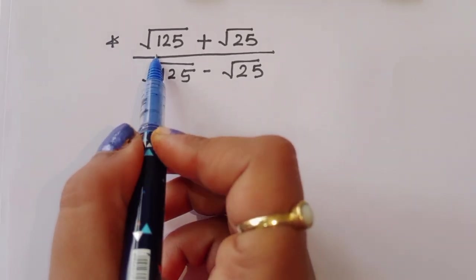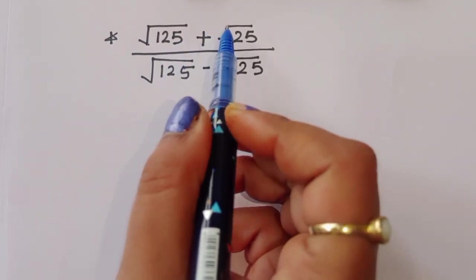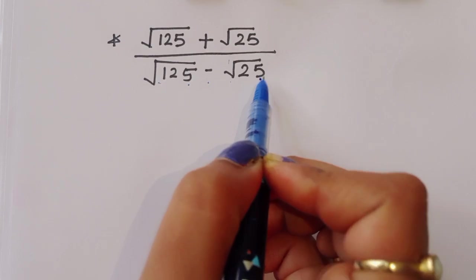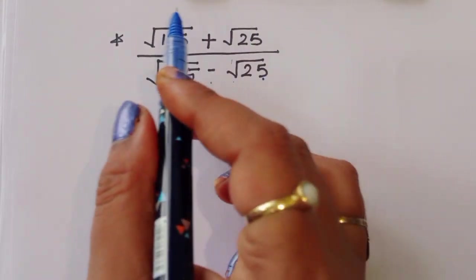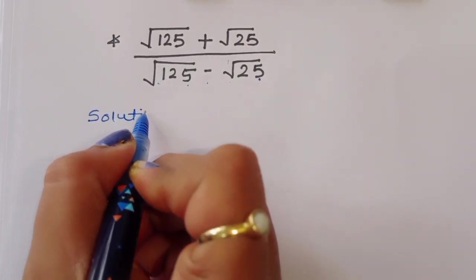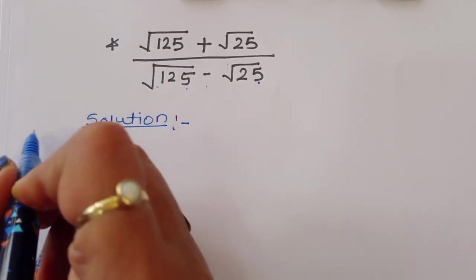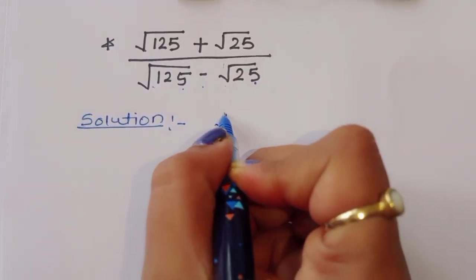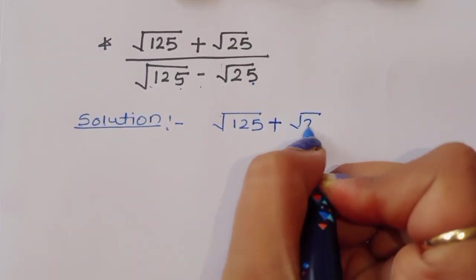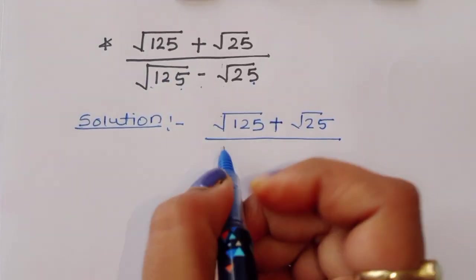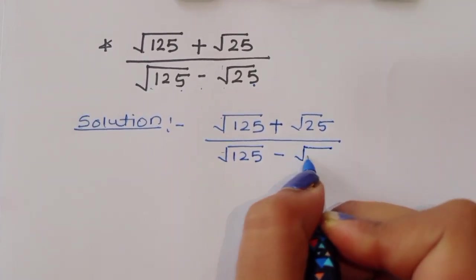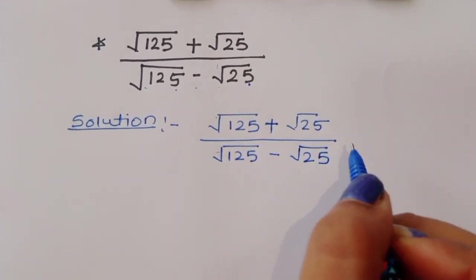The question is: the square root of 125 plus square root of 25, divided by square root of 125 minus square root of 25. We have to find the value of this expression. Let's see the solution.